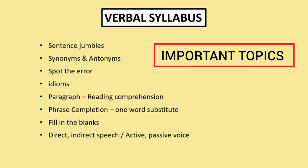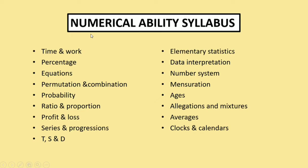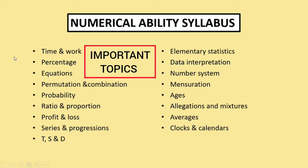For numerical ability, the topics include time speed and distance and elementary statistics (mean and median). The topics that will definitely appear in the Digital exam are: time and work, percentage, permutation and combination, ratio and proportion, profit and loss, time speed and distance, ages, averages, and allegation and mixtures. Prepare all of these as they are confirmed to appear.